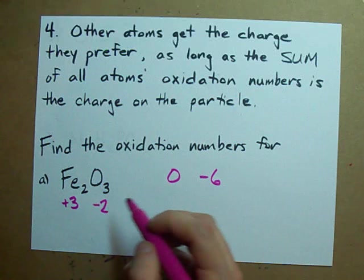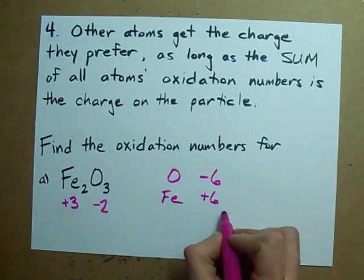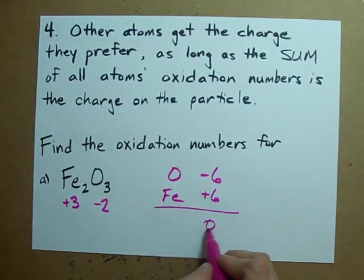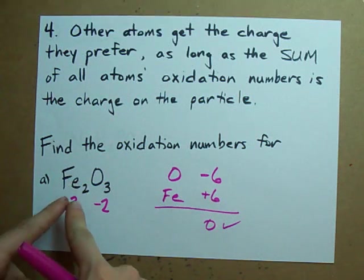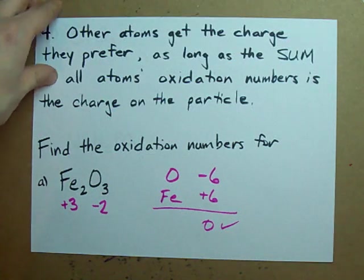I hope it's obvious they're each plus three, because two plus threes would mean a total of plus six, and in total when you add up all the oxidation numbers, you get the total charge of zero. Check. Irons get a charge of plus three in this case, oxygens minus two. Nice.